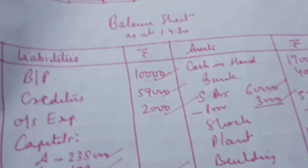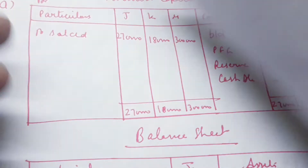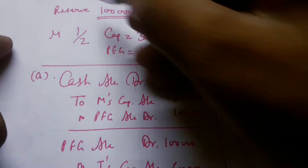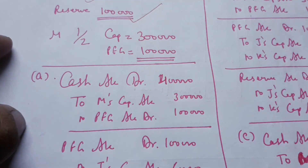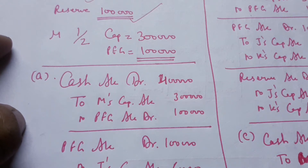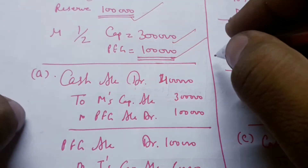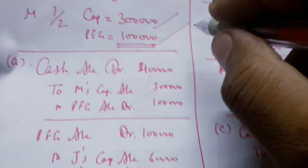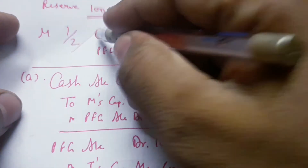Question 60 is complete. Now come to Question 61. There are three cases. J and K are partners with a reserve of $1,000,000. M has $3,000,000 capital and $1,000,000 premium. M has a loan to $1,000,000 in $5,000,000.